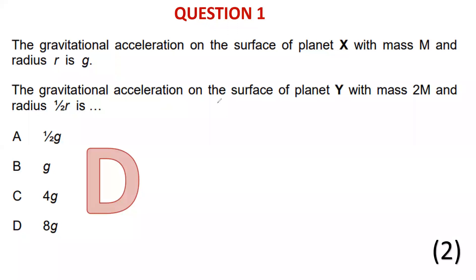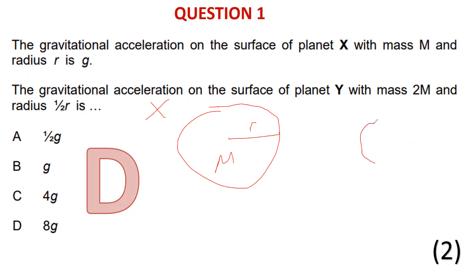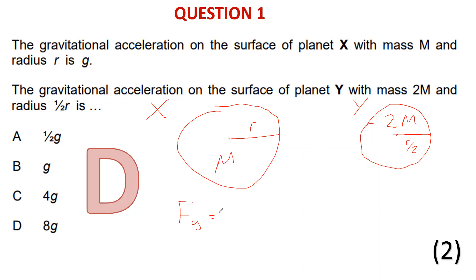Let's draw the two planets. Planet X has radius r and mass m. Planet Y has radius r/2 — it is smaller — and mass 2m. We need to remember two formulas: gravitational force, also called weight, equals m times g, or we have another formula involving the gravitational constant G.